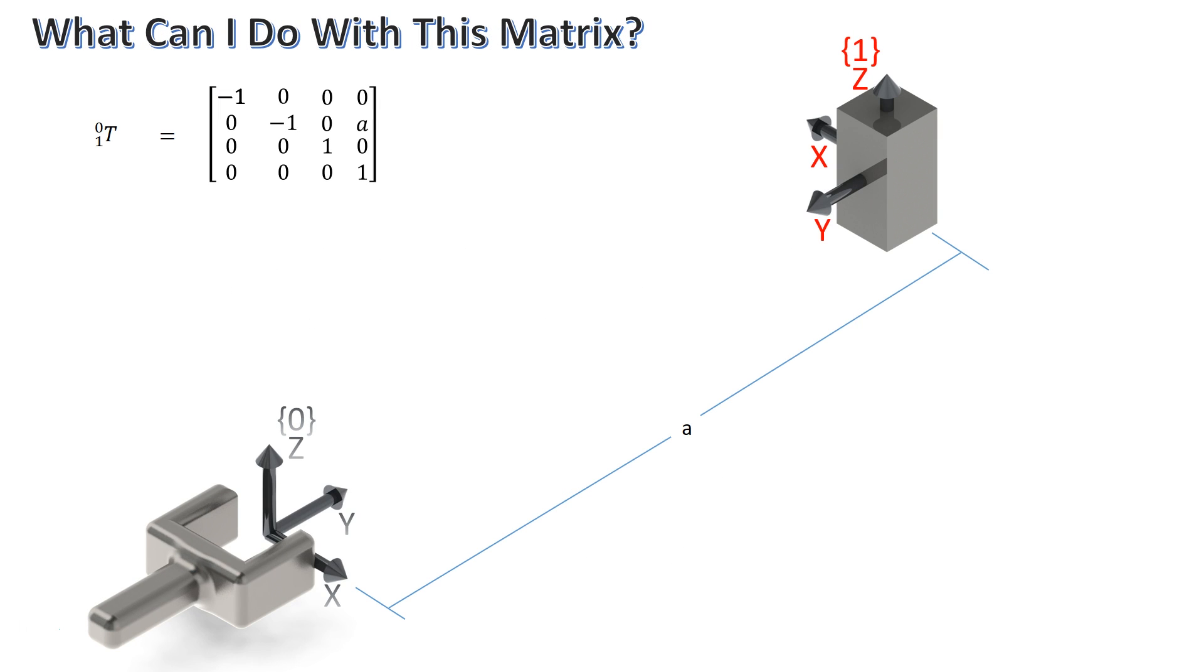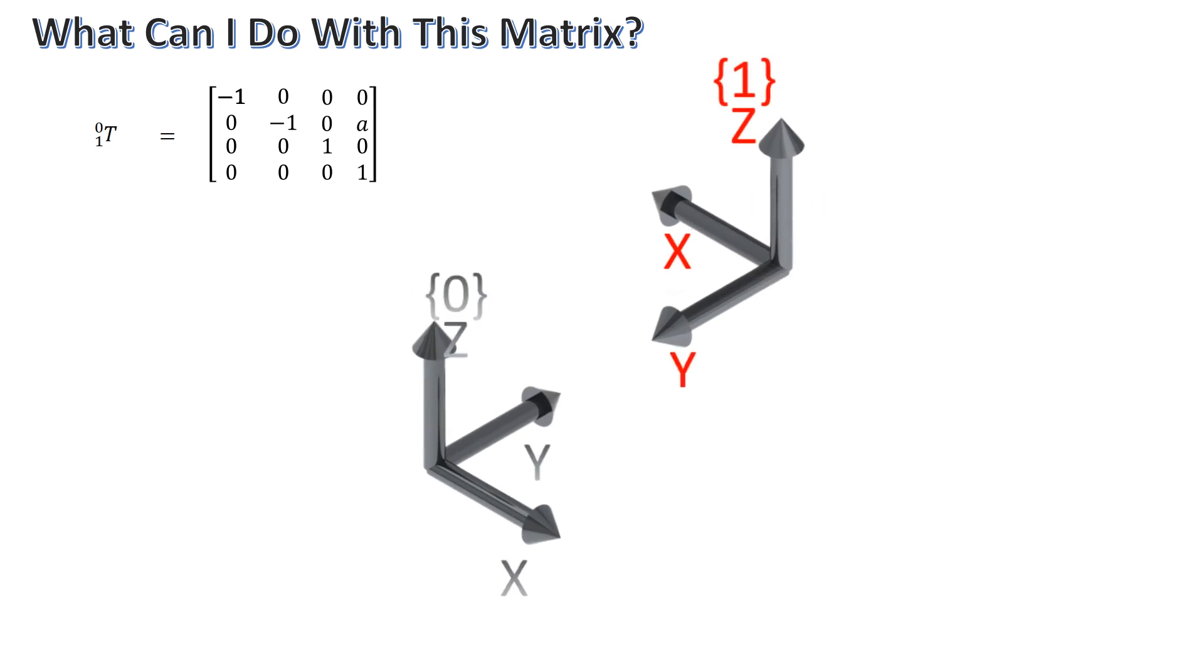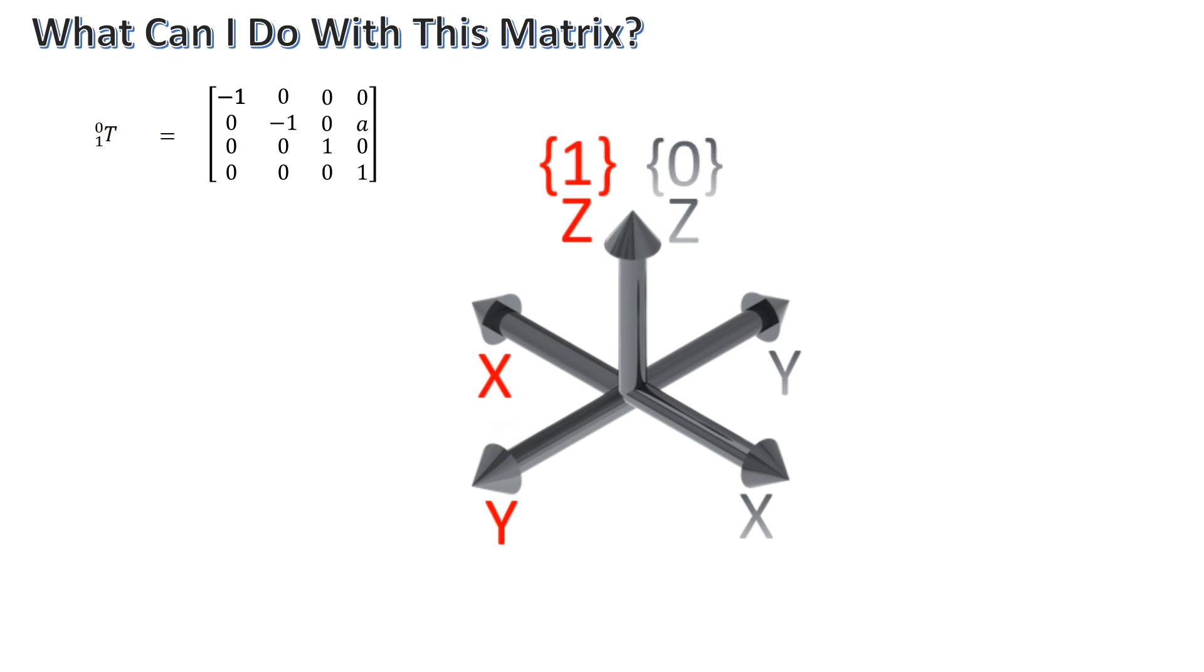So what cool things can we do with this matrix? Well, aside from being able to multiply transformation matrices together to obtain far more advanced movements, you can also get the angle between one another's axes. Let me show you what I mean. If I wanted to get the angle between the end effector's x-axis and the object's x-axis, I would just take the arc cosine of the first element of the matrix, which would be 180 degrees.